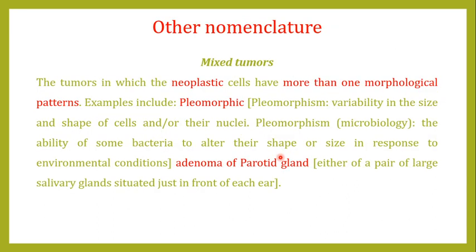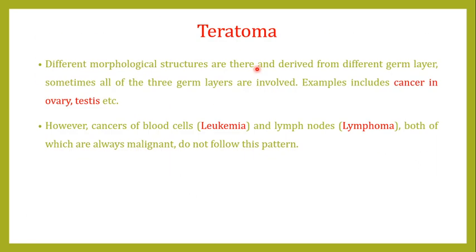We also talked about other nomenclatures for tumors, like the concept of mixed tumors, the teratoma, and I told you that cancer of the blood is known as leukemia and cancer of the lymph nodes is known as lymphoma. Both leukemia and lymphoma are always malignant.